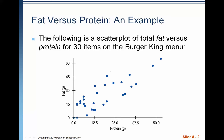Here we have an example. The scatter plot below is looking at the fat content versus the protein content for 30 different items on the Burger King menu. The protein content is our X variable, our explanatory variable, and the fat content is our Y variable, our response variable. And we see a vaguely linear positive trend of moderate strength.